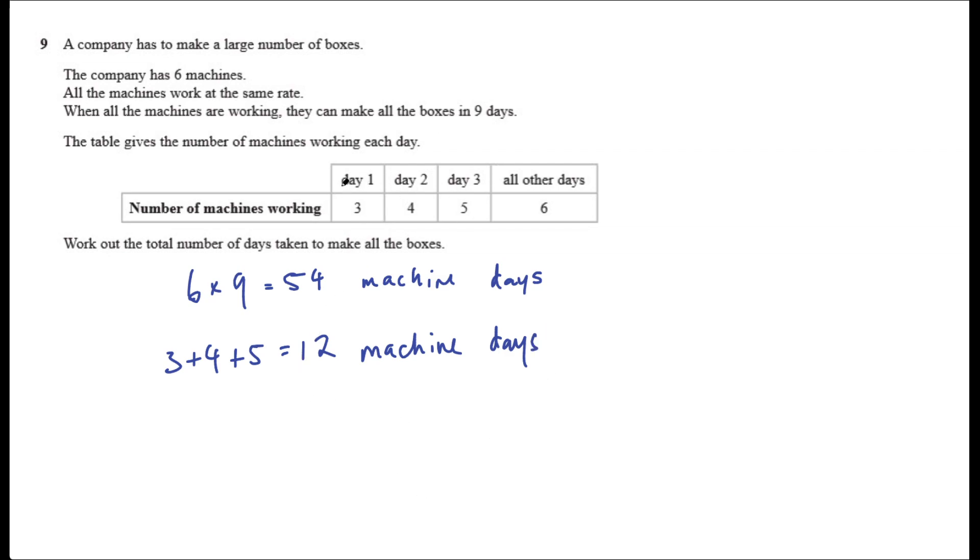Okay, and then how many machine days do we have left to complete this order of large boxes? Well, we need to do 54 take 12—that would be 42 machine days.